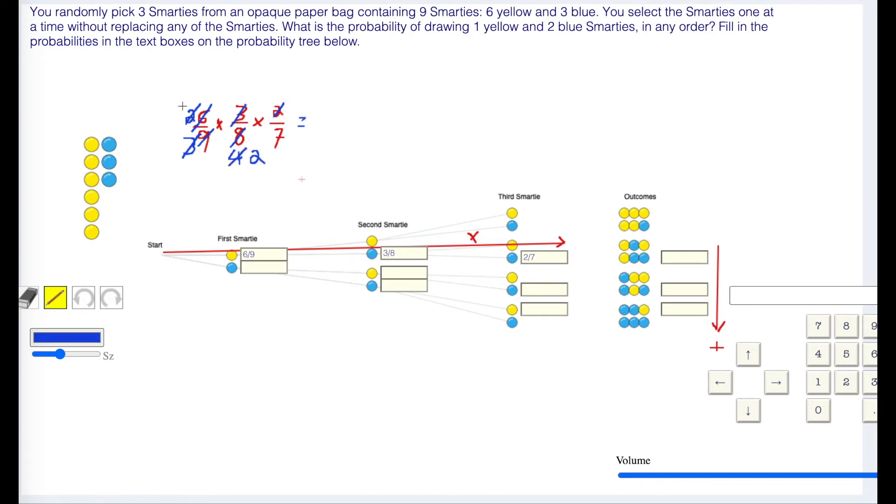On the top we have 1 times 1 times 1 which is 1. On the bottom in the denominator we have 2 times 7 which is 14. The probability of getting yellow, blue, blue is 1 out of 14.